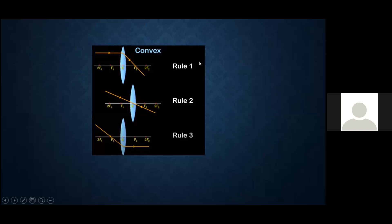Rule one: a ray of light which is parallel to the principal axis, after refraction, will pass through the focus on the other side of the lens — it will pass through F2. Rule two: there will be a ray of light passing through the optical center of the lens, and it will go straight.